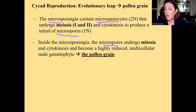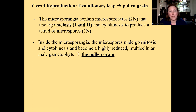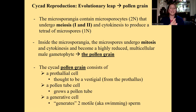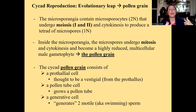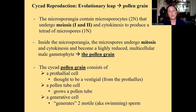What is a pollen grain? It is a highly reduced male gametophyte plant — even more reduced than the single antheridium we saw in Selaginella. A cycad pollen grain has these parts: a prothalial cell, which is thought to be a vestigial leftover cell; a pollen tube cell, which grows a pollen tube; and a generative cell, which generates two swimming sperm.